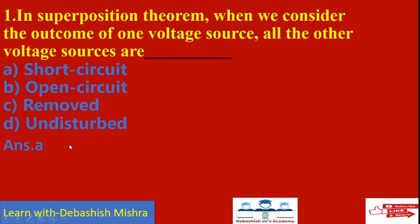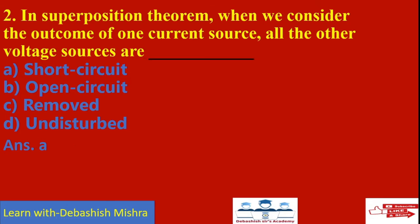Remember: voltage source is always short circuit and current source is always open circuit. The next question: in superposition theorem, when we consider the effect of one current source, all other voltage sources are short circuit. So the answer will be (a).